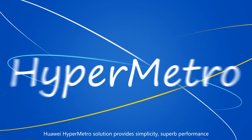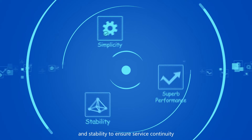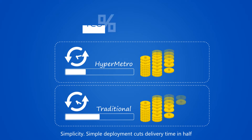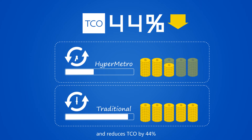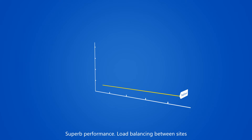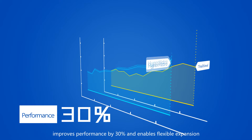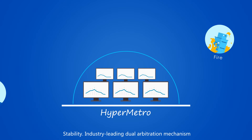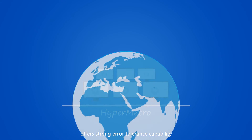Huawei HyperMetro solution provides simplicity, superb performance, and stability to ensure service continuity. Simple deployment cuts delivery time in half and reduces TCO by 44%. Load balancing between sites improves performance by 30% and enables flexible expansion. An industry-leading dual arbitration mechanism offers strong error tolerance capability.